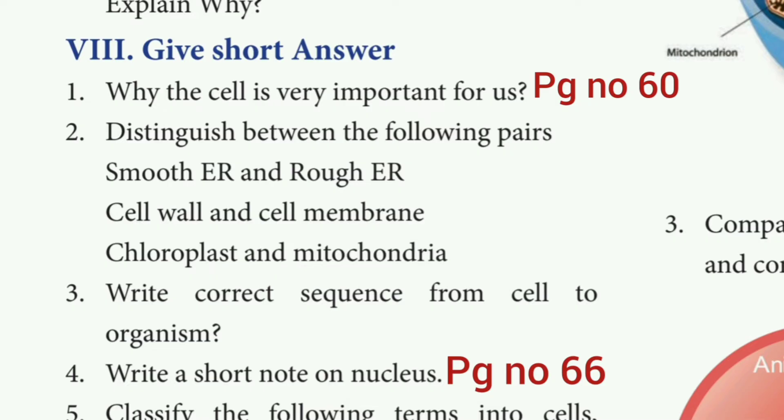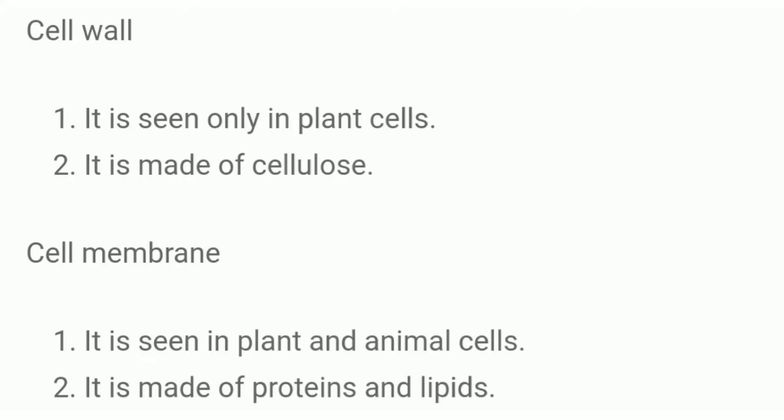Then second question is cell wall and cell membrane. The answer is cell wall: It is seen only in plant cells. It is made up of cellulose. Cell membrane: It is seen in plant and animal cells. It is made up of proteins and lipids.